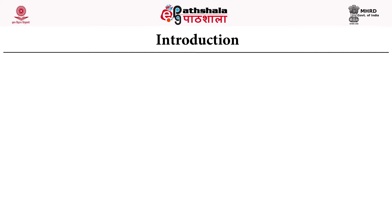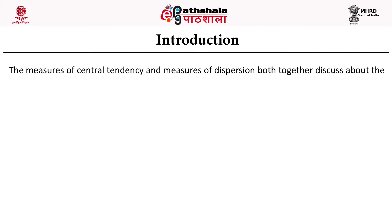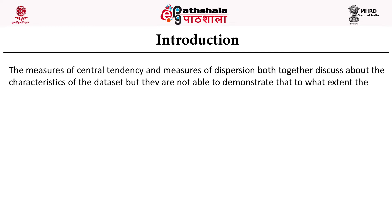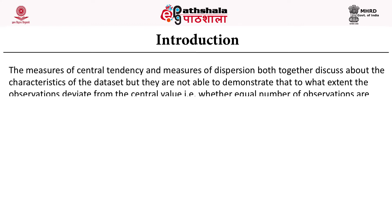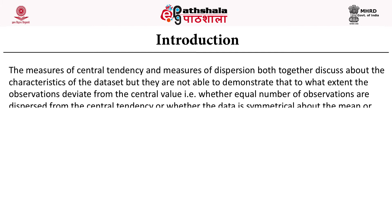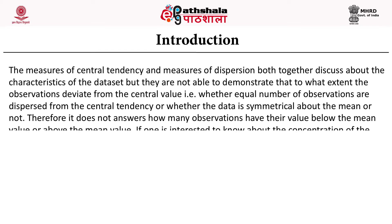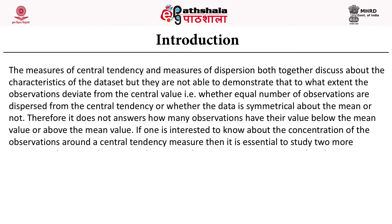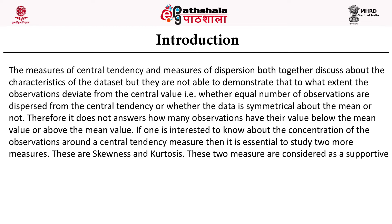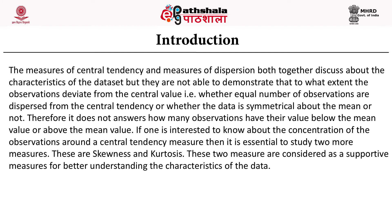The measure of central tendency and measure of dispersion together discuss the characteristics of a dataset, but they are not able to demonstrate to what extent the observations deviate from the center value — whether equal numbers of observations are dispersed from the central tendency, or whether the data is symmetrical about the mean or not. Therefore it does not answer how many observations have their value below or above the mean. If one is interested to know about the concentration of observations around the central tendency, then it is essential to study two more measures: skewness and kurtosis. These two measures are considered supportive measures for better understanding the characteristics of data.